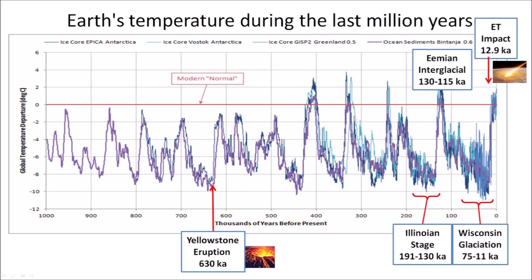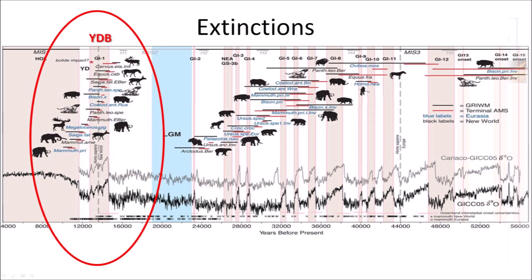Let us now consider the ecological consequences of the extraterrestrial impact that created the Carolina Bays. A chart of the Earth's temperature during the last million years shows the time intervals during which it would have been possible to meet the conditions necessary for the formation of the Carolina Bays. The Wisconsin Glaciation extended from approximately 75,000 to 11,000 years ago, with several times when ice advanced to cover the Great Lakes. The Younger Dryas was a cold period starting 12,900 years ago that lasted about 1,200 years, and the most severe and sudden extinction of the megafauna occurred at this onset.